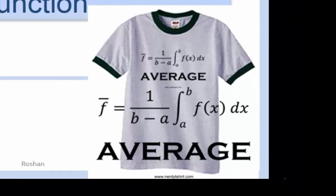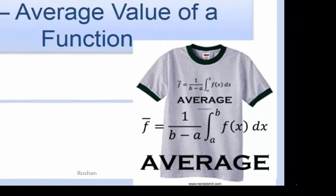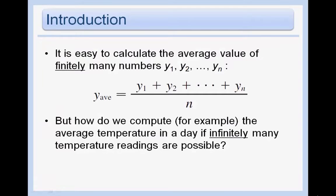Average value of a function. If we want to calculate the average value of a certain amount of numbers that we know, that's easy. We just add them all up and divide by the number that we're adding up. That's how we find an average.